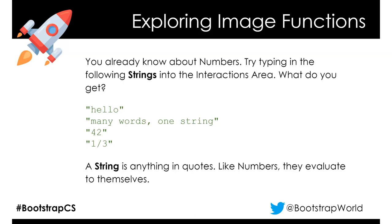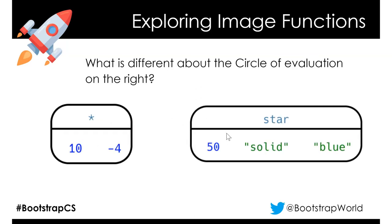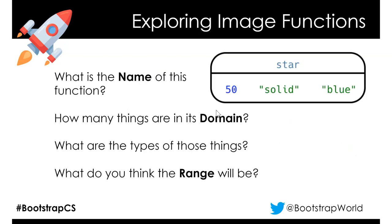Now we can do more fun stuff with circles of evaluation. Last time we used arithmetic, but we've now outgrown that being the only thing we can program. We can put anything we want into a circle of evaluation. Here is multiplication - its name is star, it has inputs of 10 and negative 4, a domain of two numbers. Now look at this: star with a number, a string, and a string. Its name is star - how many things are in its domain? Three: number, string, string.